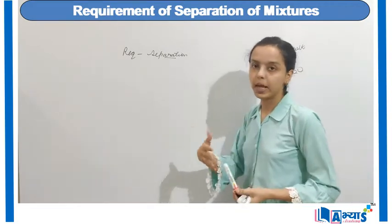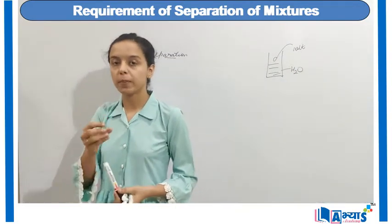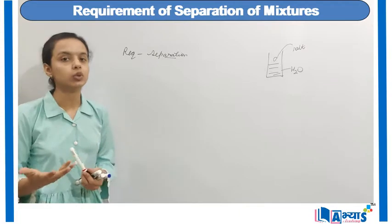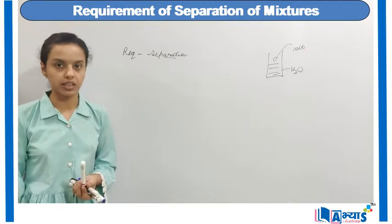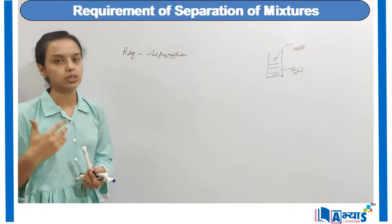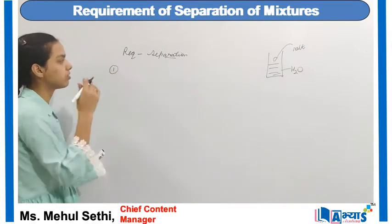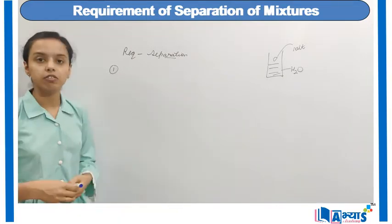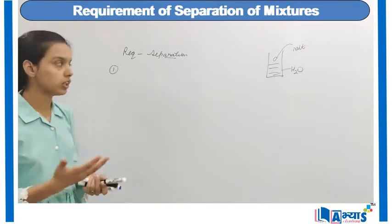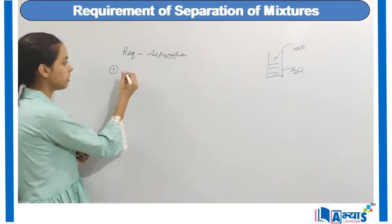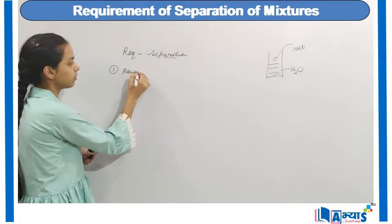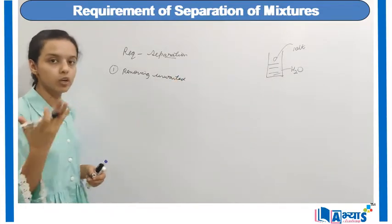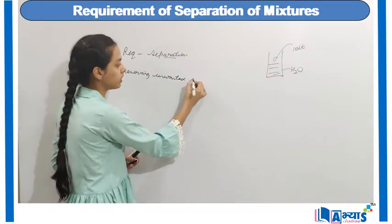When we have different types of mixtures in the environment, we need to separate some of the important substances. In this video we will discuss why we need to separate substances and what methods are used for separation. The first requirement or advantage of separation is that we are actually removing the unwanted or non-useful substances.